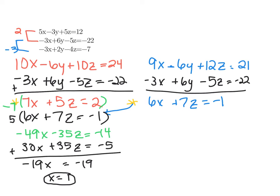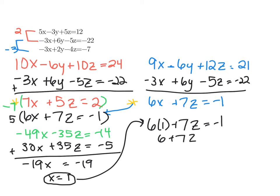I'm not done because the system has three variables. I need to find the other two. I'll take X equals 1 and plug it back into this equation: 6X plus 7Z equals negative 1. So 6 times 1 plus 7Z equals negative 1, which gives 6 plus 7Z equals negative 1. Therefore 7Z equals negative 7, which means Z equals negative 1.